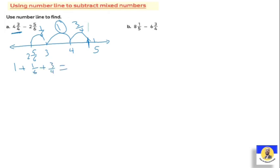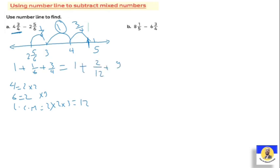We need to add these together with like denominators. The LCM of four and six: four is two by two, six is two by three, so LCM equals two by two by three equals twelve. Multiplying: one over six times two gives two over twelve, and three over four times three gives nine over twelve. So the answer is one plus two over twelve plus nine over twelve, which equals one and eleven over twelve.